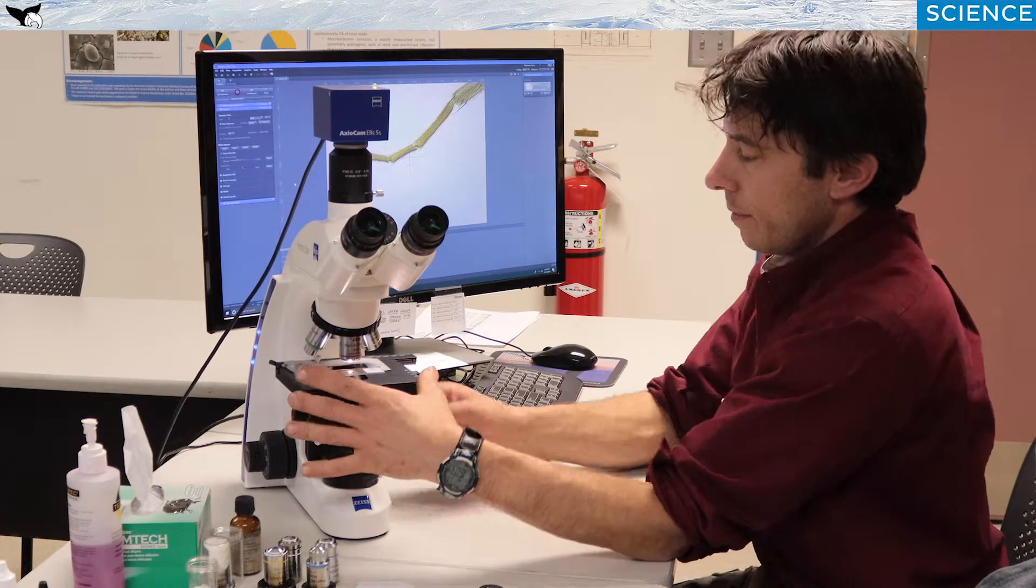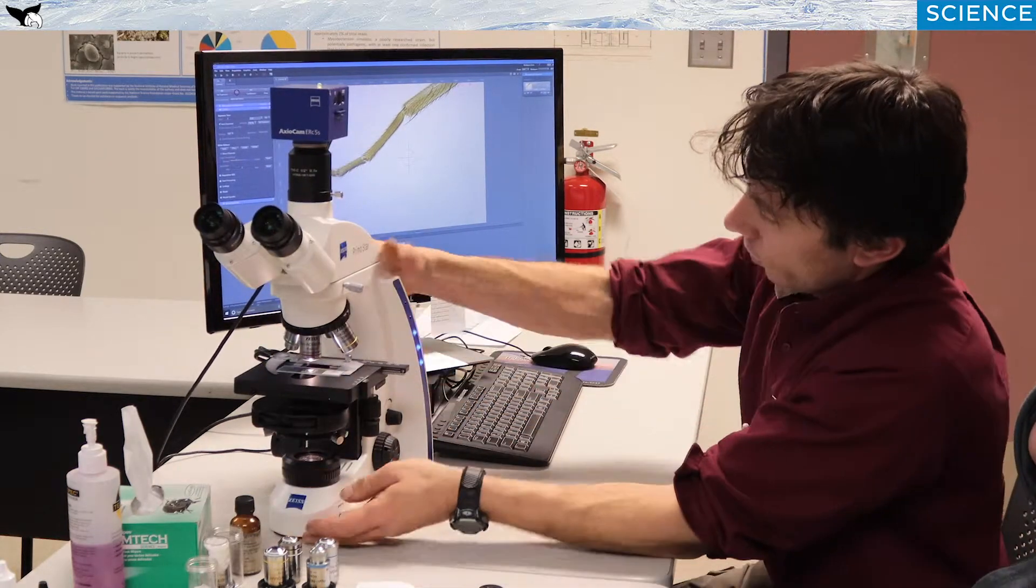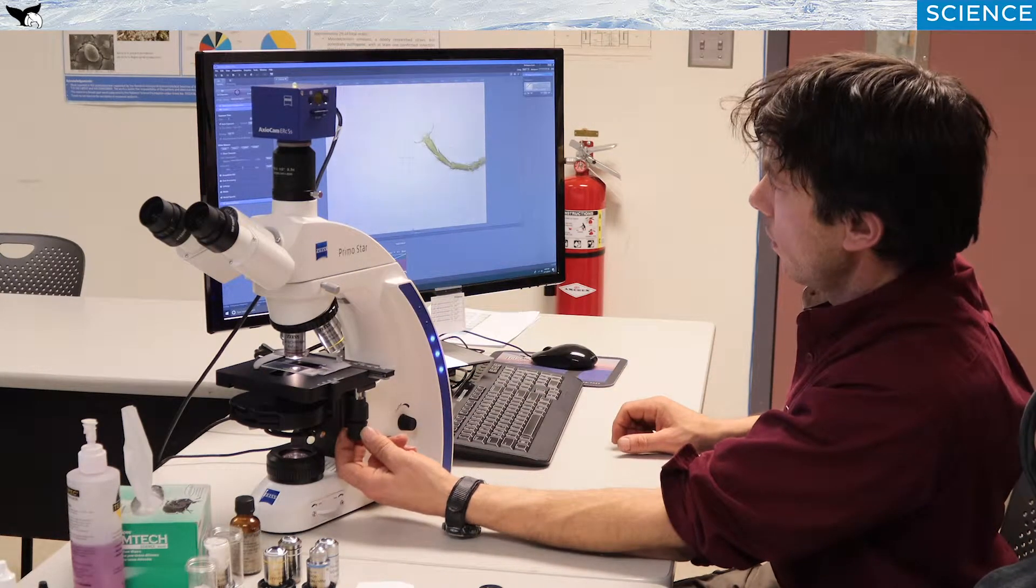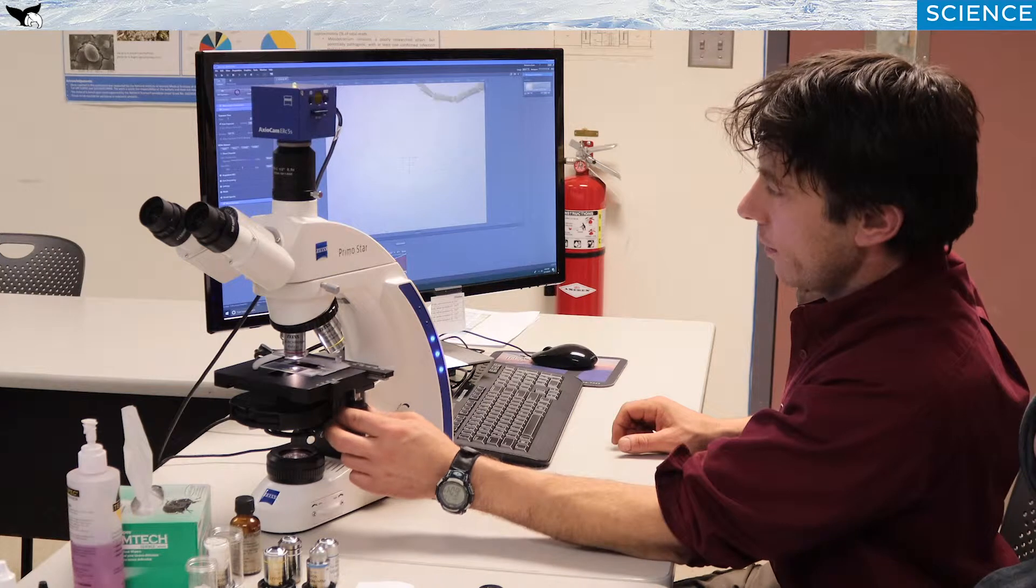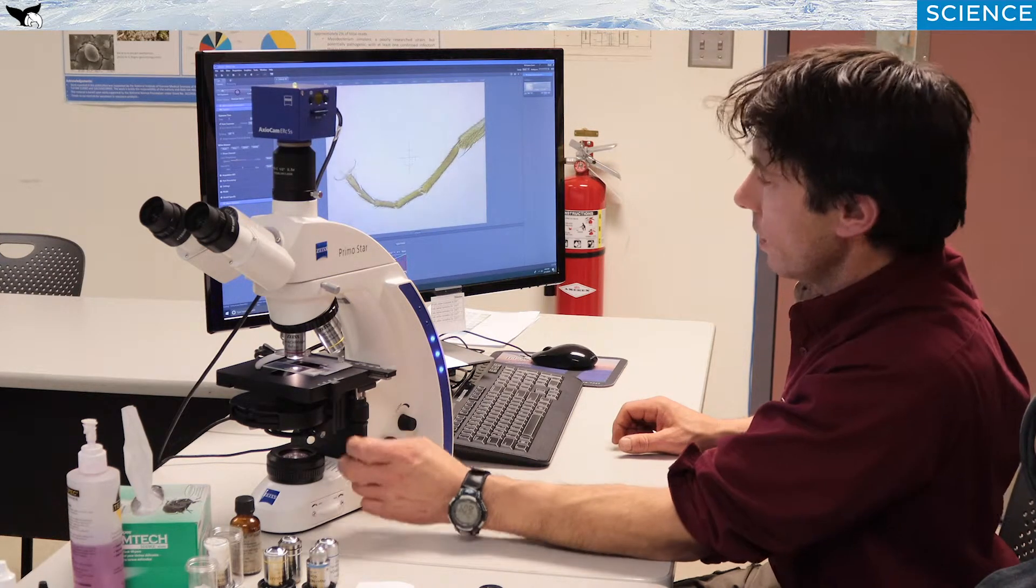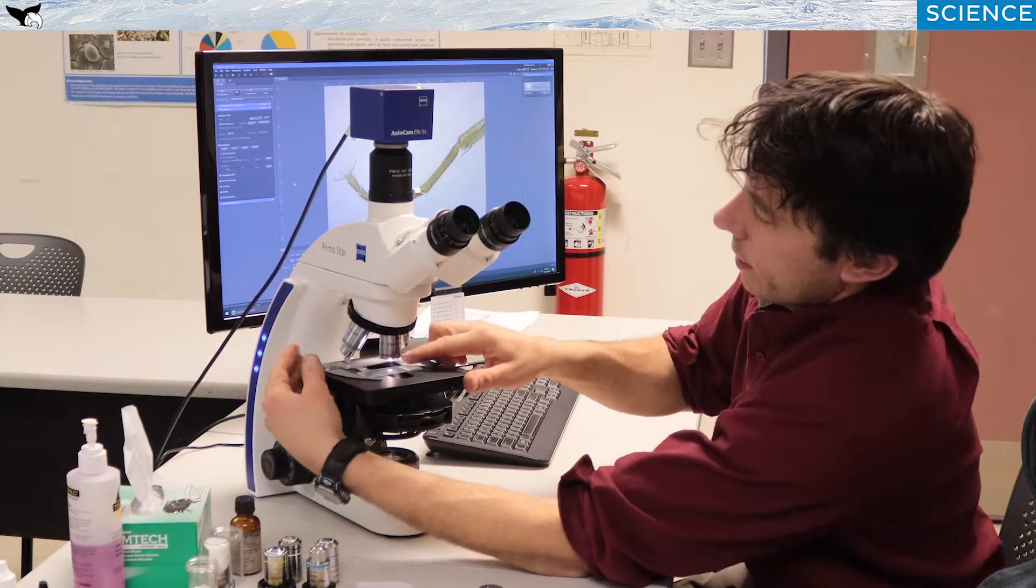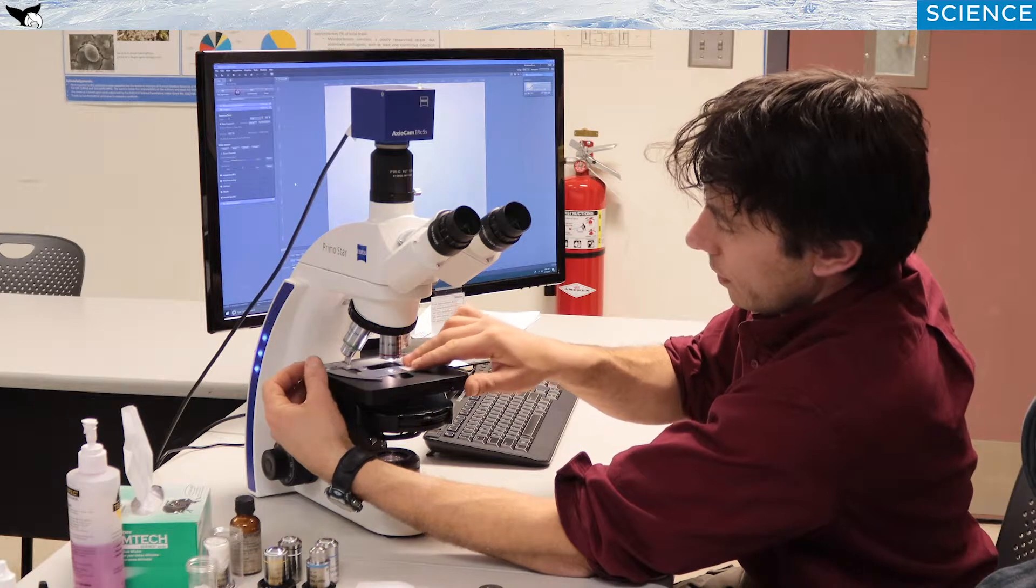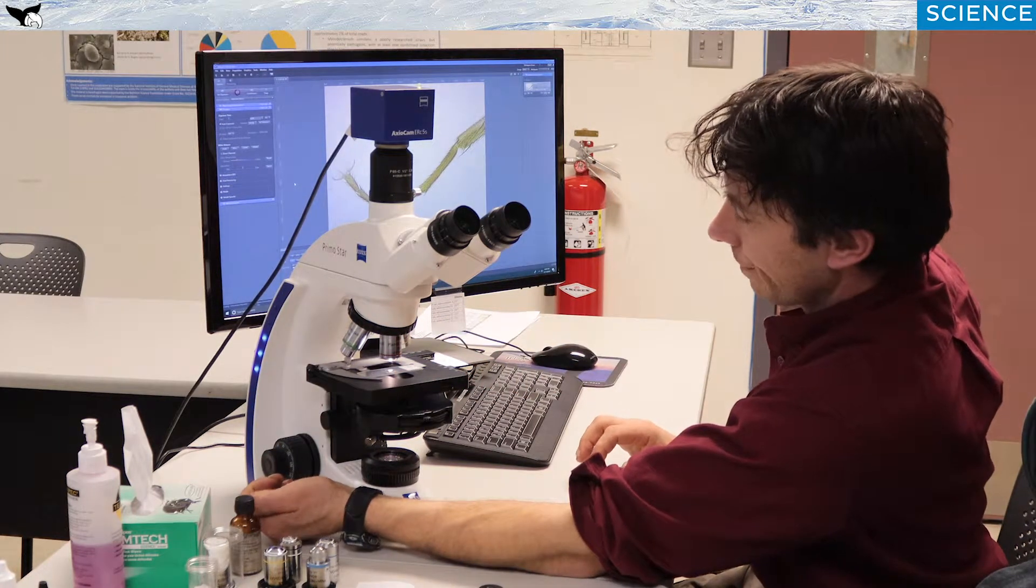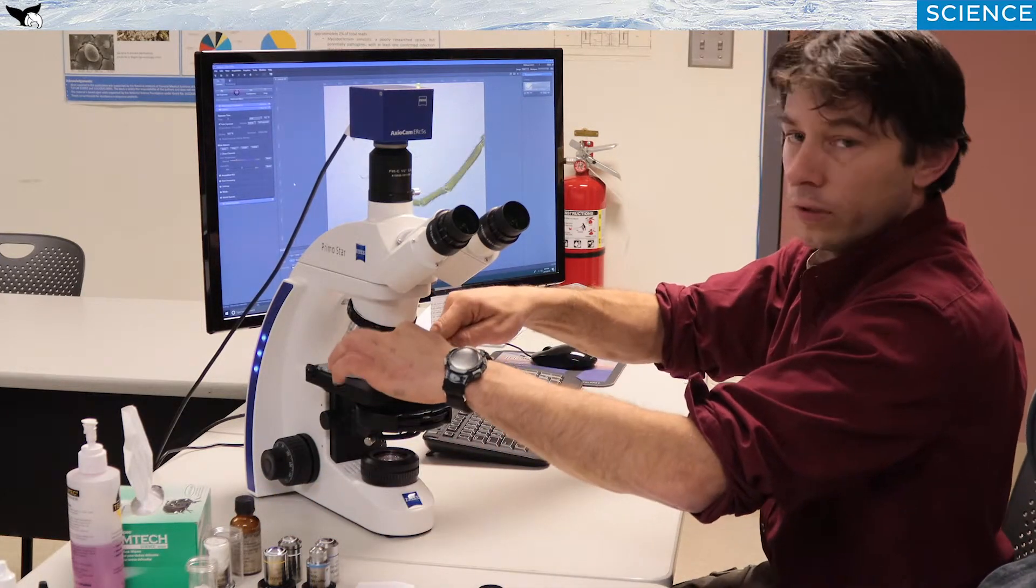So next area up is the stage. We have two controls over here that control the x-axis and the y-axis for real precise movements, particularly when we get to higher magnifications. On top of the stage should be some type of a specimen holder. In this case, it's a little spring clipped specimen holder. On the simpler scopes, there are two little spring-loaded fingers that just hold it down.